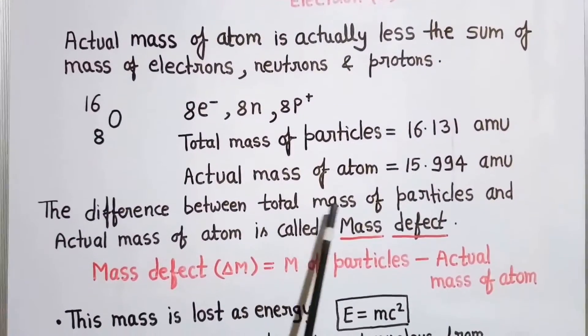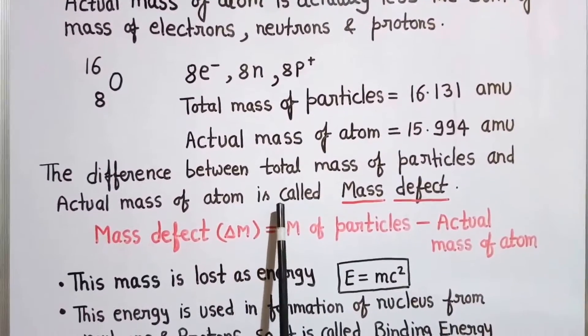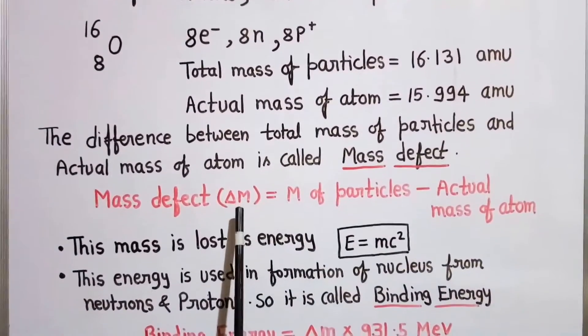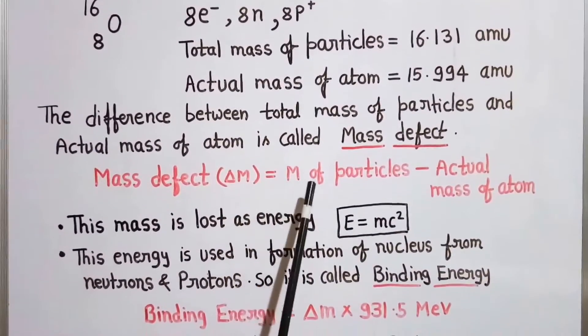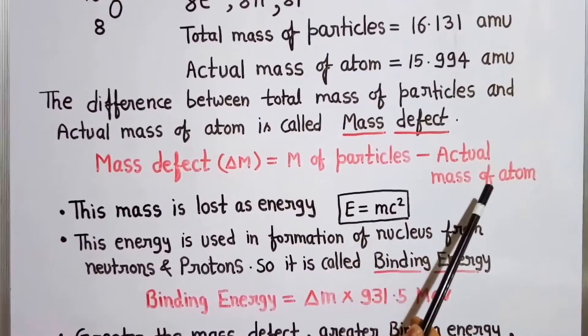This difference, the total mass of particles and that of actual mass of atom, is known as mass defect. It can be denoted by Δm and it is equal to the sum of mass of particles minus actual mass of atom.